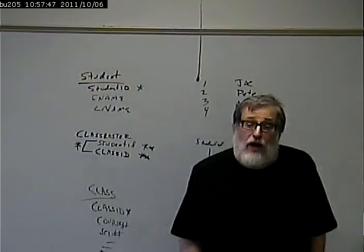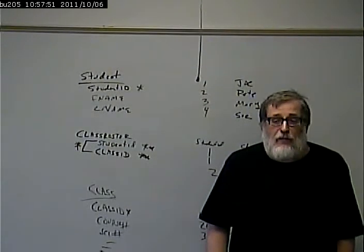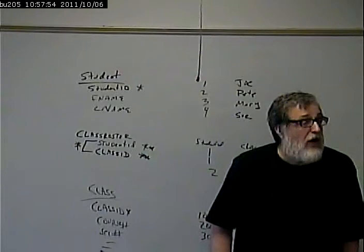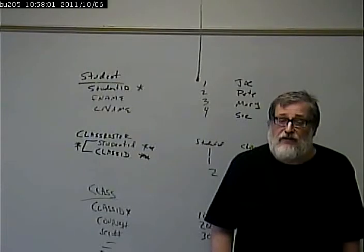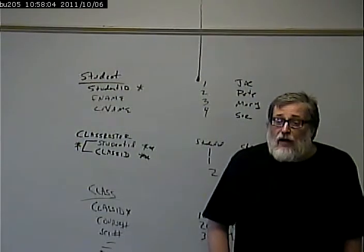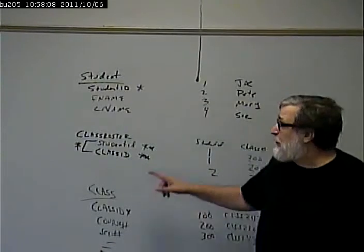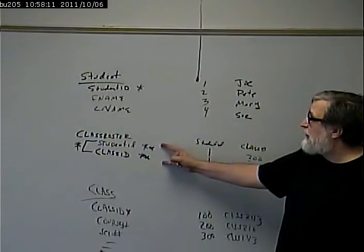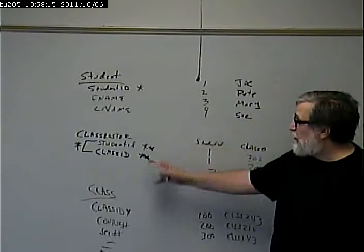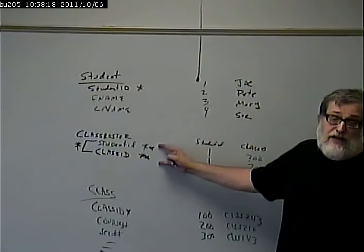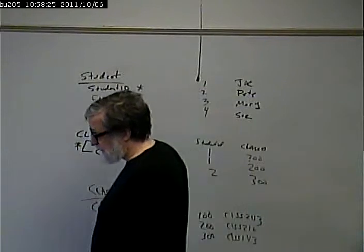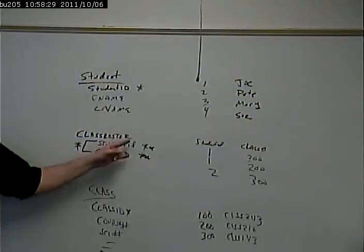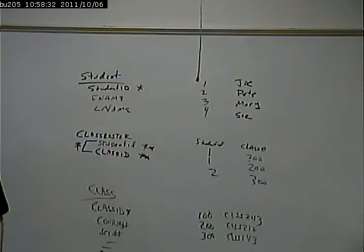Those are the two main relationships that you run into. And again, the way to implement them is fairly straightforward. One to many is very straightforward. You have a foreign key in one table on the many side that points to the one side. Many to many, there are a couple of options. This is the simplest option where you create an intersecting table.